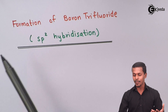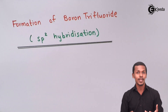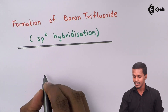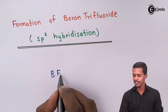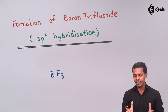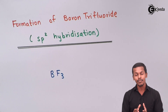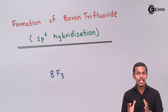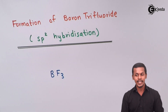We are going to study the formation of boron trifluoride with the help of sp2 hybridization. Let us understand the structure of boron trifluoride — the molecular formula is BF3. Boron is the central atom in the molecule, and we need to concern ourselves with this because hybridization deals with electronic configuration.